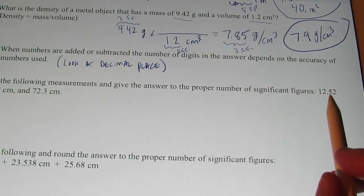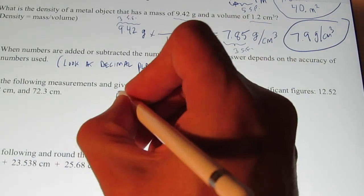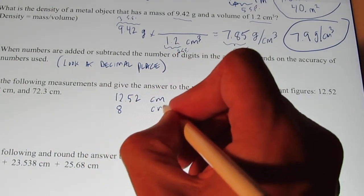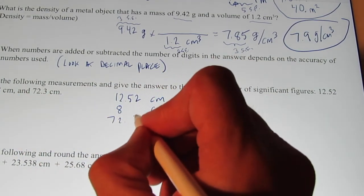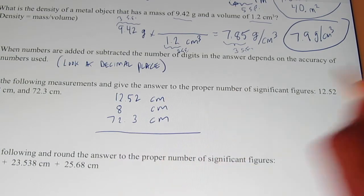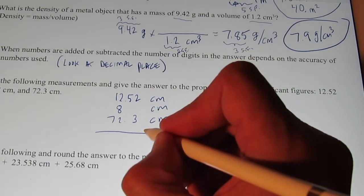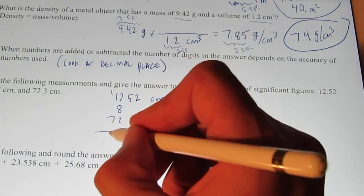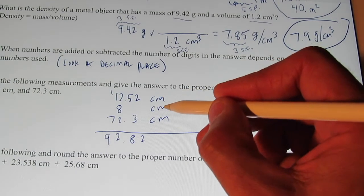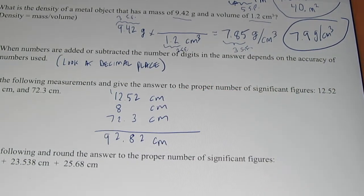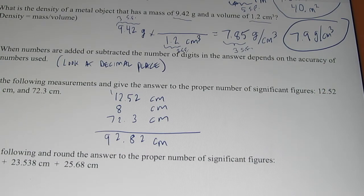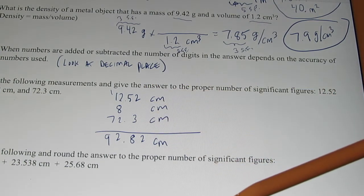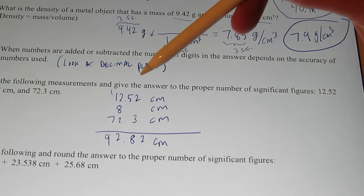Let's say we want to add 12.52 centimeters, and 8 centimeters, and 72.3 centimeters. Okay? Now, when I add these up, I'm going to get a 2 and 8, a 2, carry the 1, 7, 8, 92.82. And centimeter plus centimeter plus centimeter is simply centimeters still. So, I end up with 92.82 centimeters. Now, ask yourself, is my answer more accurate than my measured values? Well, once again, of course it is. In my first measurement, didn't I have my measurement to the nearest hundredth of a centimeter?